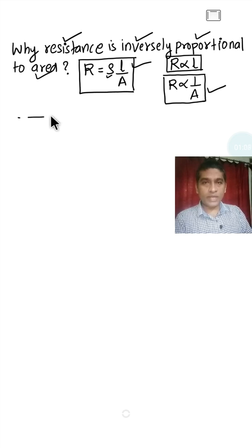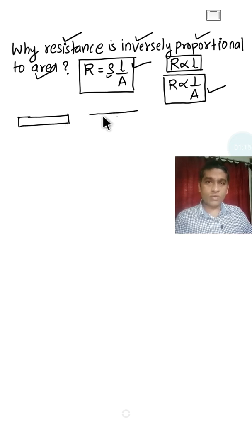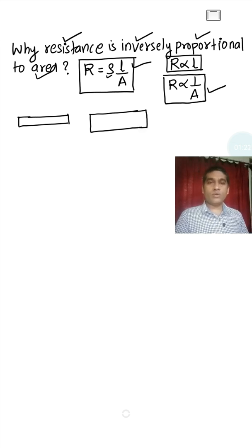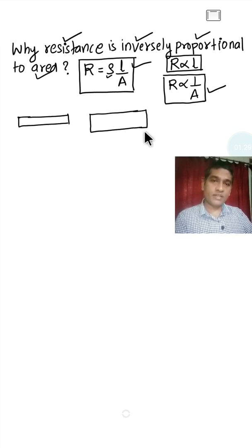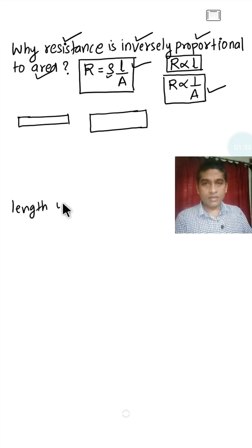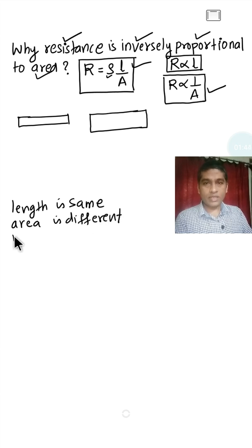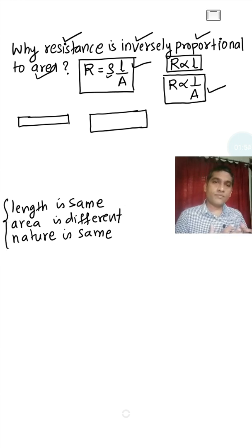In order to explain this, let us consider two wires. We have two wires of equal length, but the area of cross section is different. Let us assume that these two wires are made from the same material. So: length is same, area is different, and nature is same. These are the initial conditions.